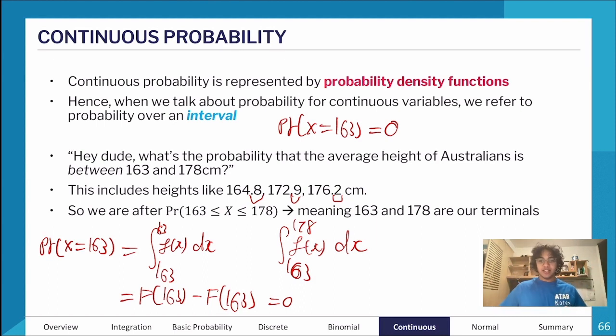What's the probability their height is exactly 163 centimeters? Super low, impossible. In that scale, maybe there's one person who's exactly 163 centimeters, but it's out of millions.